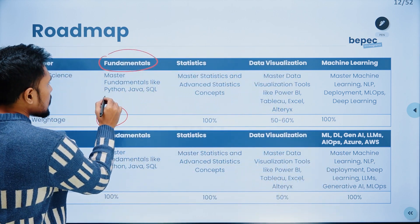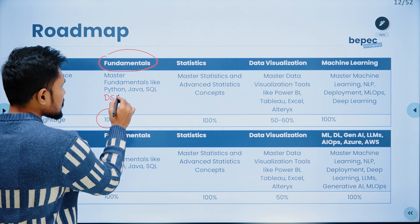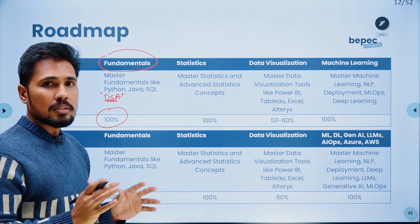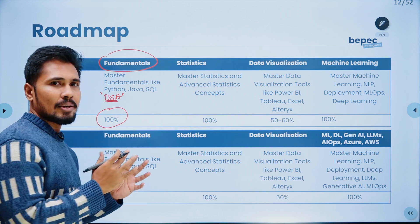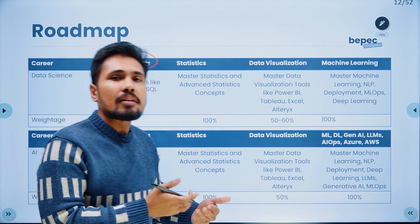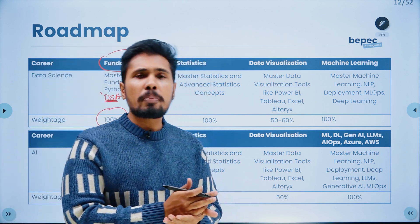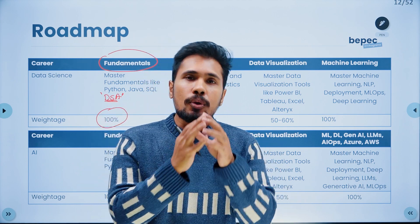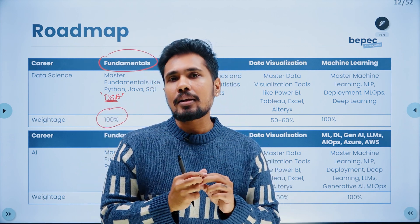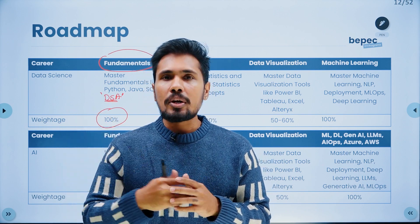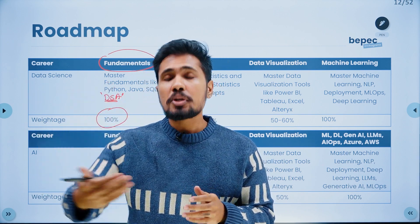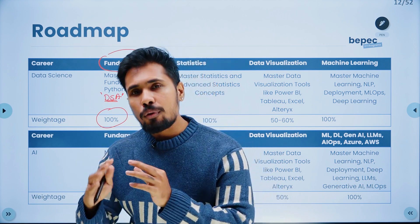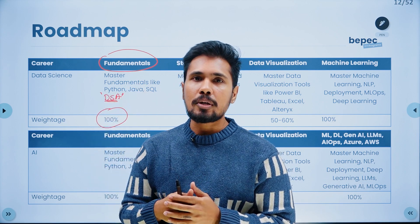Apart from that, within Python, if you can learn DSA — data structures and algorithms — that is going to be an advantage. DSA is not mandatory for a data scientist, but learning it is an advantage. Once you complete Python and SQL, you should know how to do data cleaning in Python, how to do EDA in Python, how to do data retrieval and data understanding in SQL, data definition language, creating schemas, data pipelines, and data models like ER diagrams.